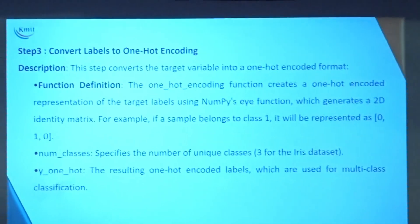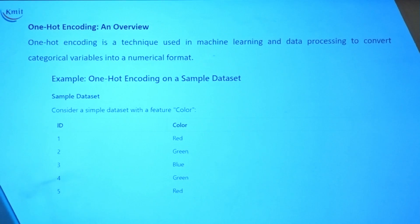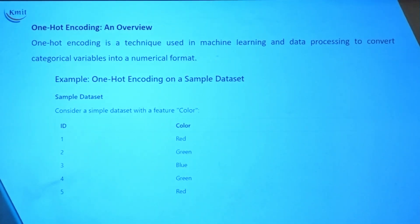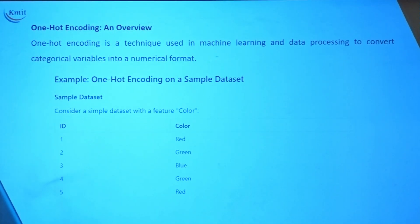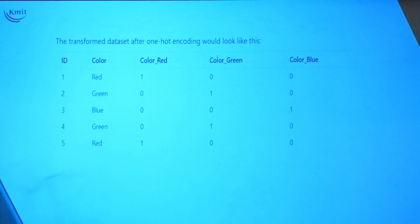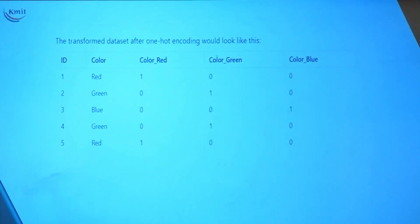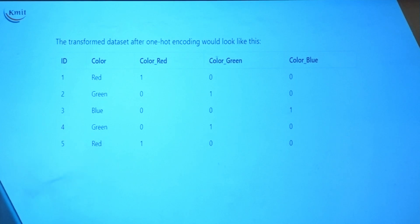In one-hot encoding, if you have three classes like red, green, blue: red is given [1, 0, 0], green is [0, 1, 0], blue is [0, 0, 1]. Wherever that category appears it gets a 1, others get zeros. If you have four classes, it becomes [0, 1, 0, 0], and so on.